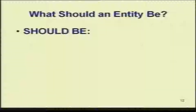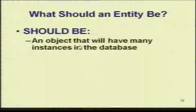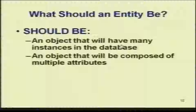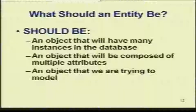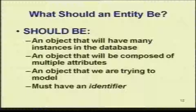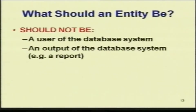What should an entity be? It should be an object that will have many instances in the database — if you have only one instance or one tuple, you do not talk about that as an entity. It will consist of multiple attributes and it must be about an object that we are trying to model. It must have an identifier. And what it should not be: you should not have as an entity the user of a database or the output of a database.